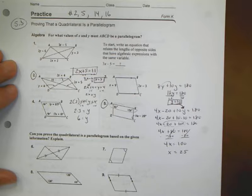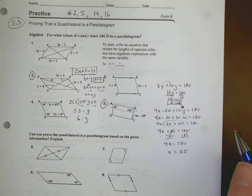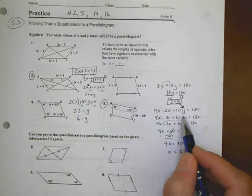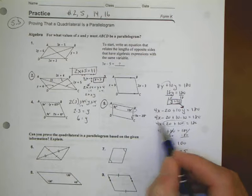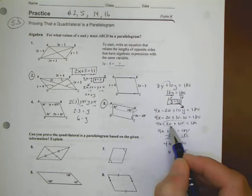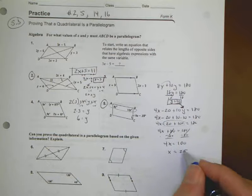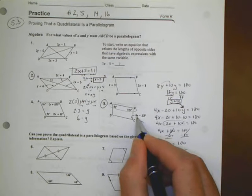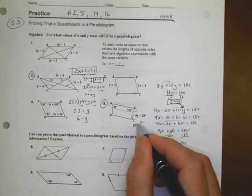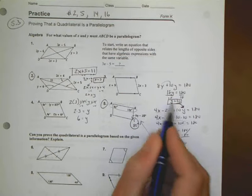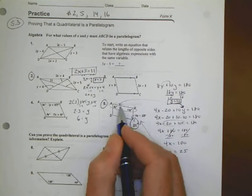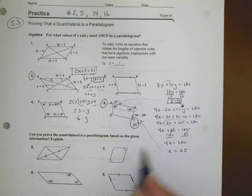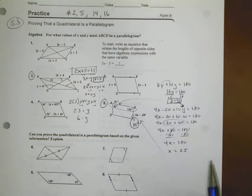I'm going to double check my work here. We said 4x minus 20 plus 10y equals 180. Plug the y in, I get 10 times 10 is 100. If x is 25, and I double check by plugging it back in, this would be 4 times 25 is 100 minus 20 is 80. And I can confirm that by putting my y value over here and saying 8 times 10 is also 80. These angles should correspond because they're opposite of each other.